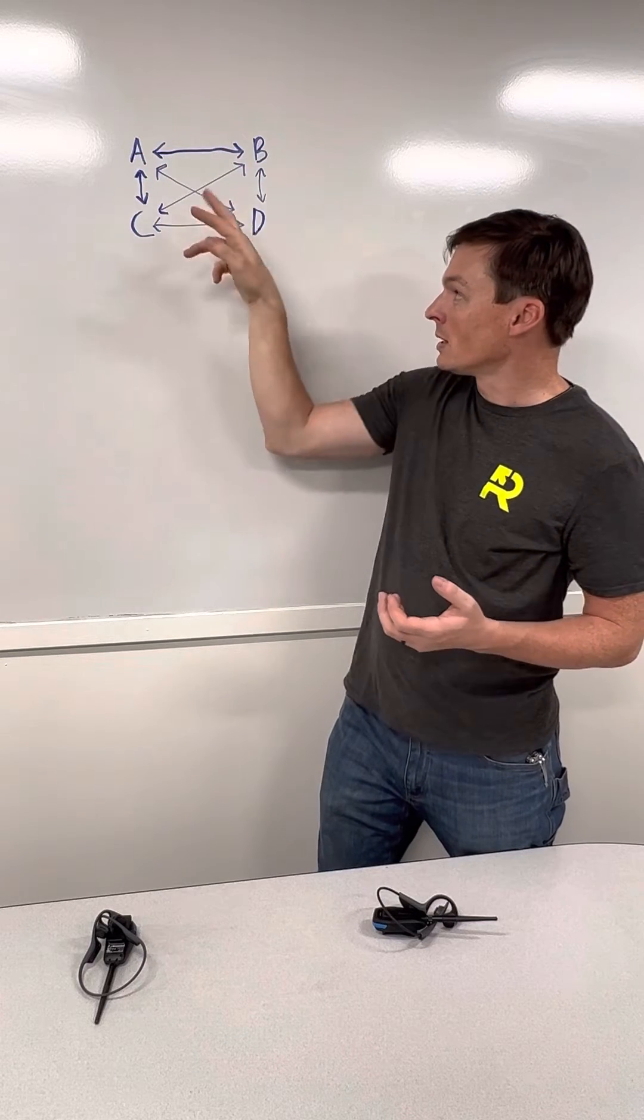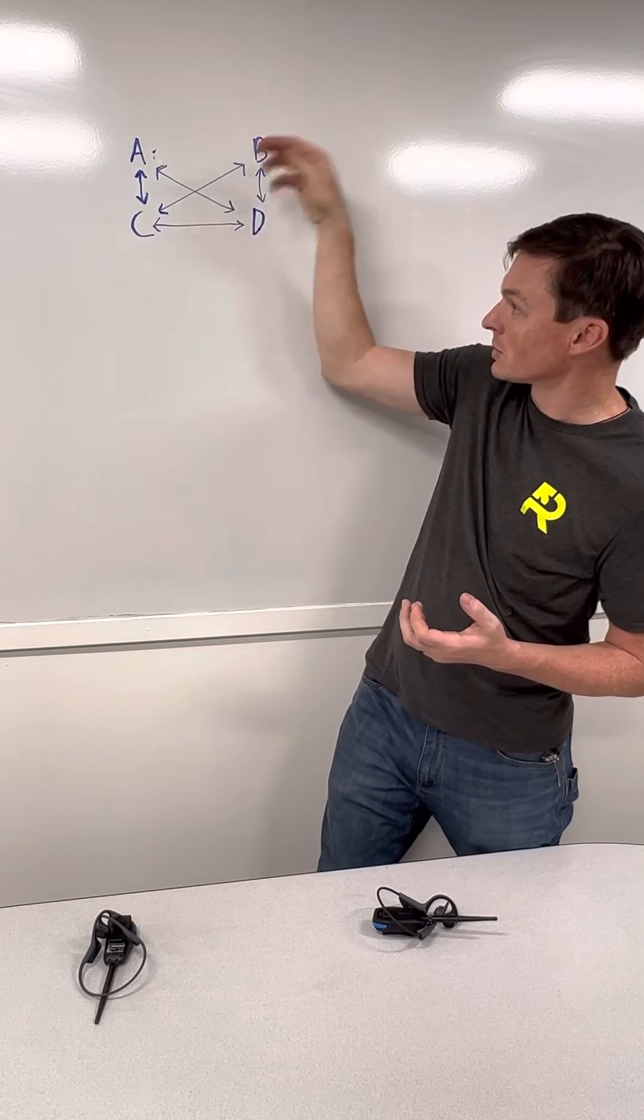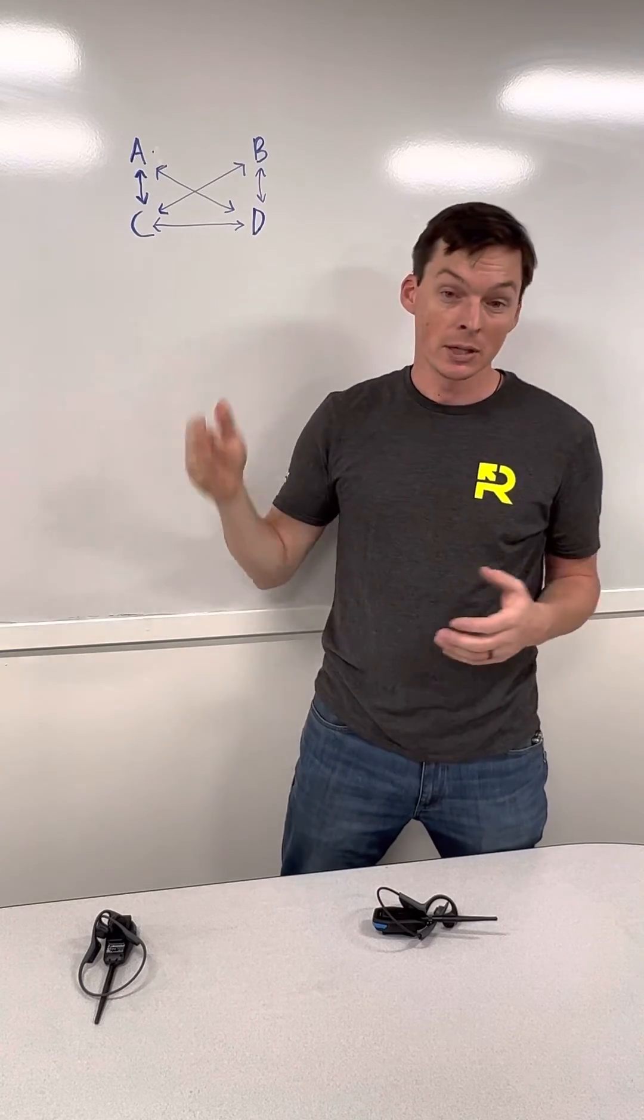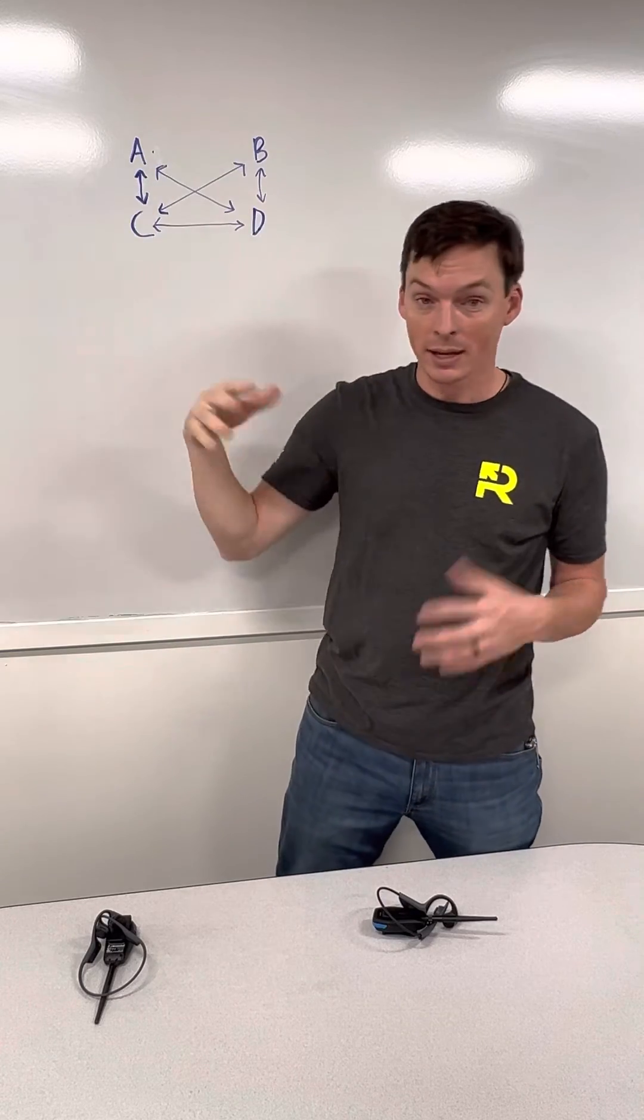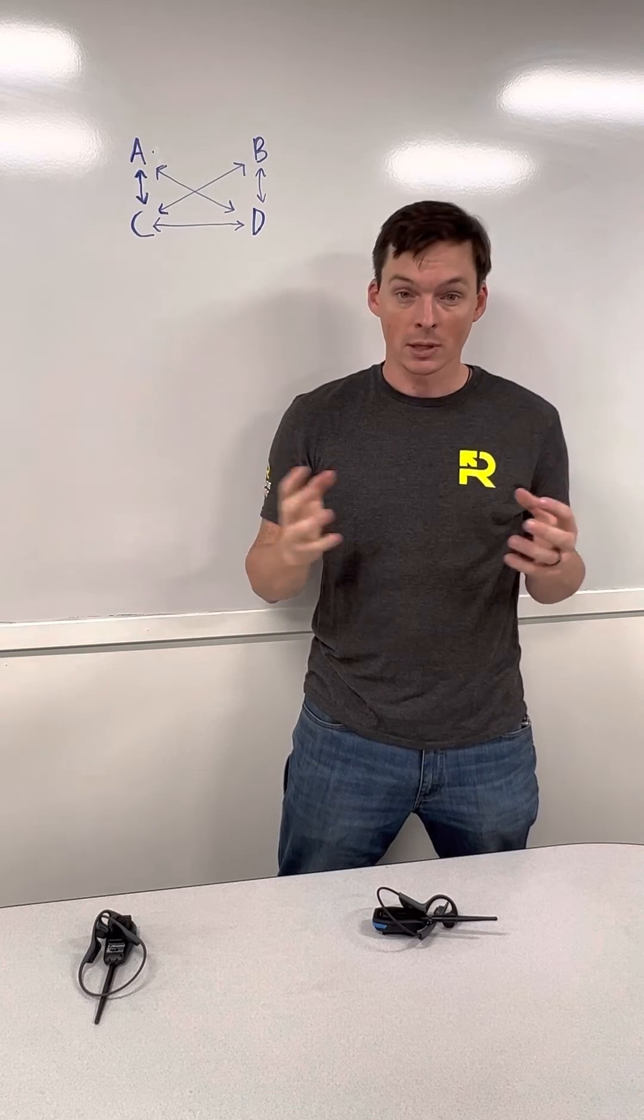to B to C to D, if we eliminate that A to B connection—B leaves the scene, walks out—then A, C, and D are all still connected and still talking to each other. And it's self-healing, so if B comes back, then they're right back into that mesh network. So it's an open intercom, so you can